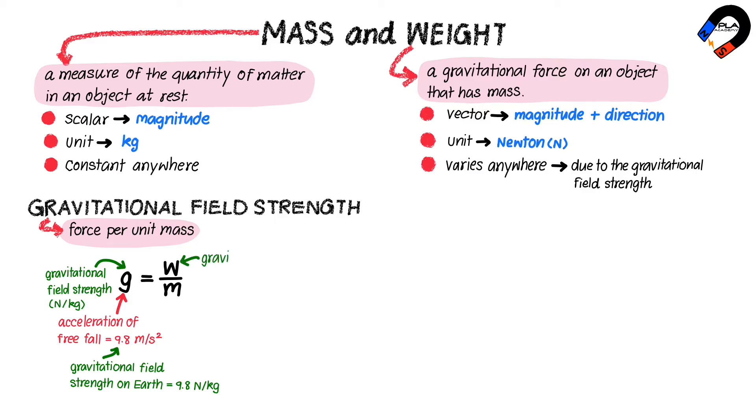Where W is the gravitational force or weight in newtons, and M is mass in kilograms. Therefore, we can rewrite this equation to find weight as W equals M multiplied by g.